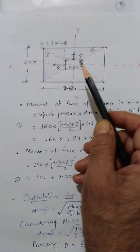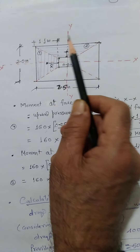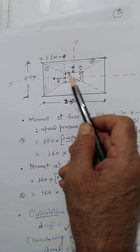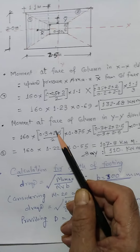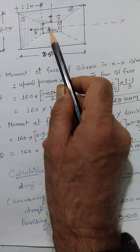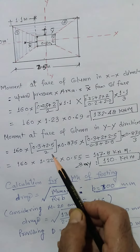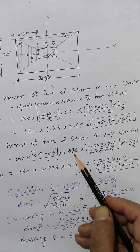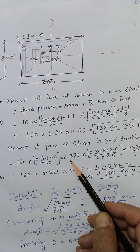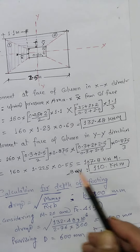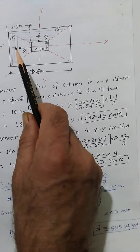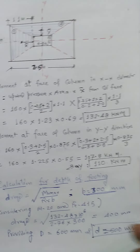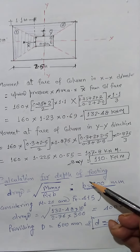Similarly, in the YY direction, the upward pressure remains the same at 160 kN per meter square. We find the area of the trapezoid in that direction and its CG. The parallel sides are 0.3 m and 2.5 m, perpendicular distance is 0.875 m. Multiplying upward pressure by area and CG distance gives the bending moment along that face of the column, which comes out to be 110 kilo Newton meter. So in the XX direction it is 132.48 kNm, and in the YY direction it is 110 kNm.